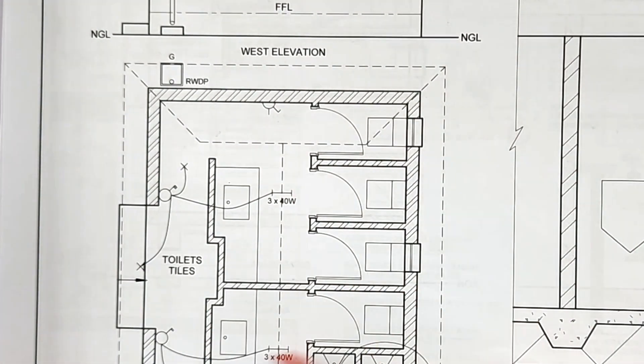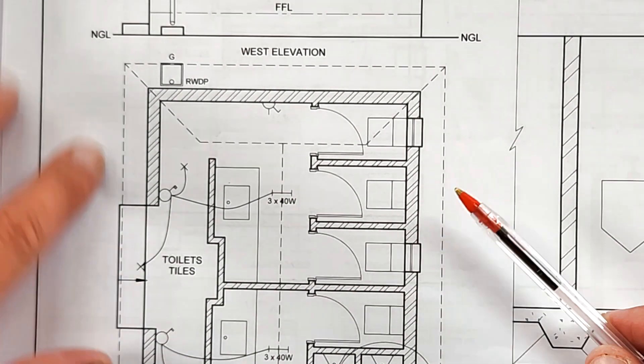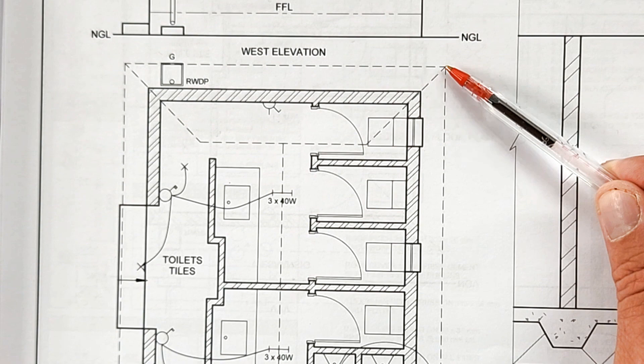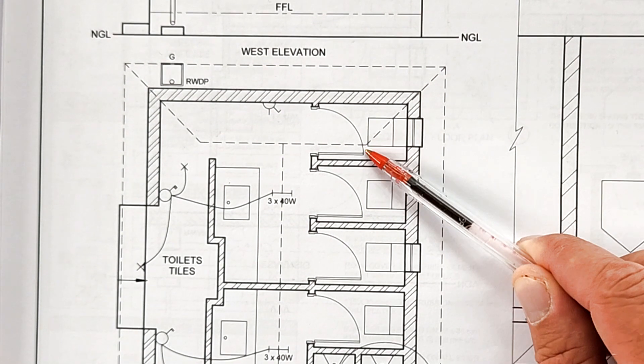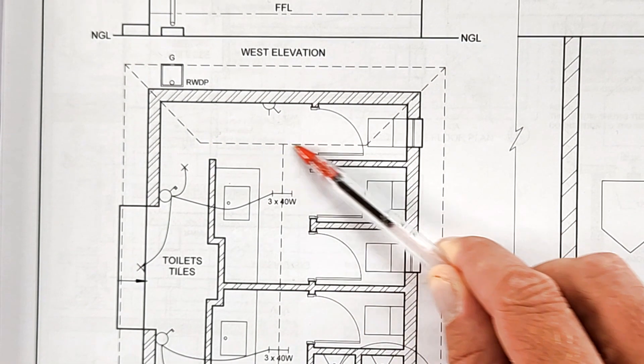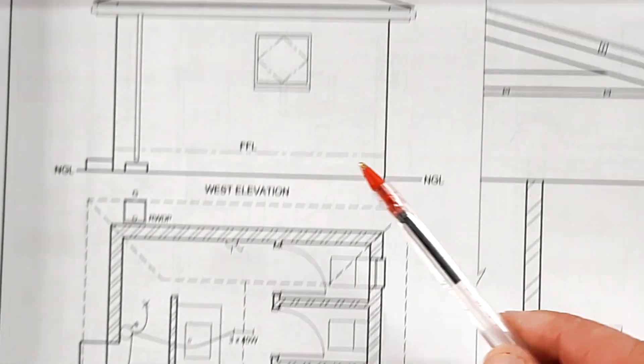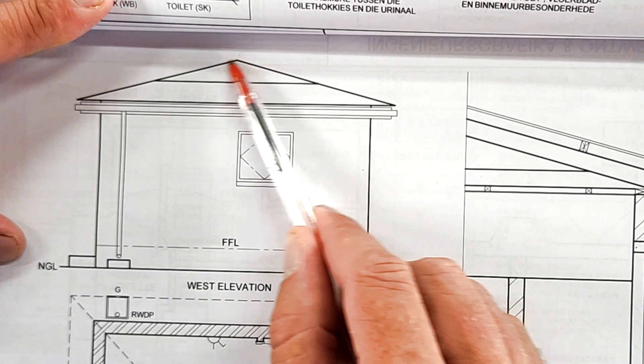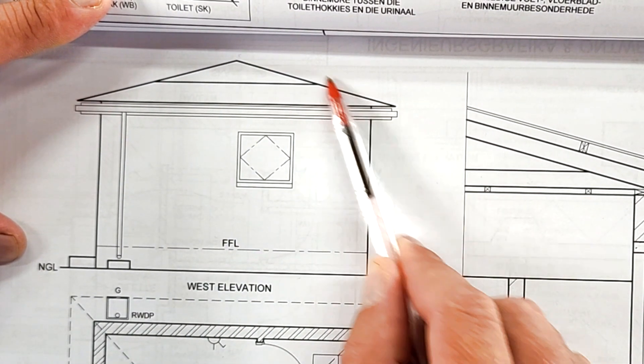Dutch gable roofline—can you see how that looks? This part here represents the Dutch gable part that's viewed in this elevation. That also gives you an idea of how the elevation will look in the end.